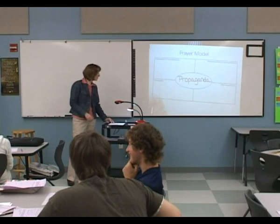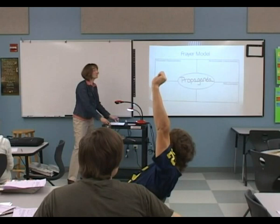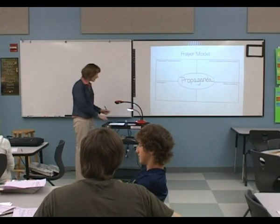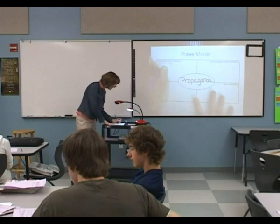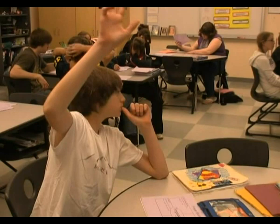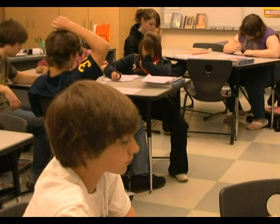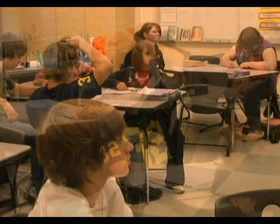So let's start with the essential characteristics. What are some things that propaganda absolutely has to have? [Student]: It has to be convincing. Do you agree? [Student]: It means to have a biased opinion. [Teacher]: It is always biased. [Student]: It has to have a goal. [Teacher]: It has to have a goal — there's a reason for it.